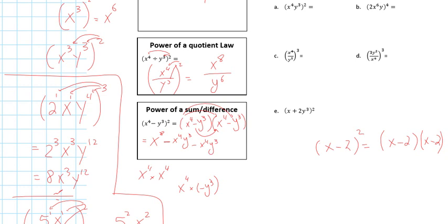Last one. Negative y cubed times negative y cubed. So I'm multiplying this by this. Negative and negative gives me positive. So I have y cubed times y cubed. Y to the 6 because I'm adding my exponent.